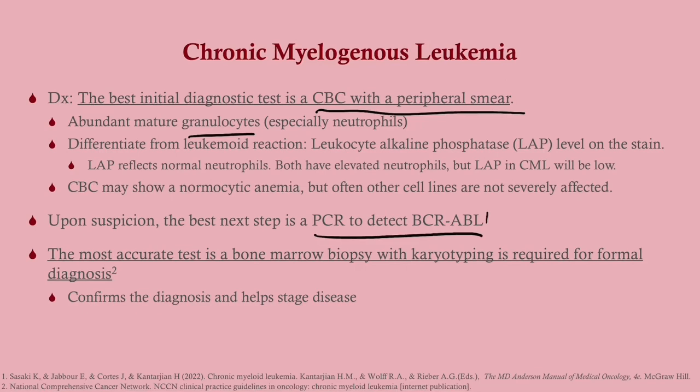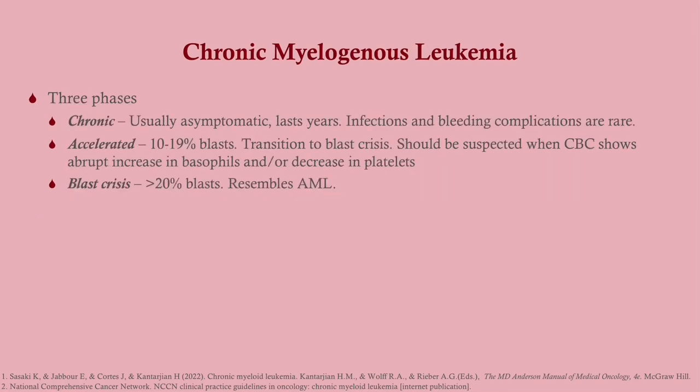The best next step upon suspicion is a PCR to detect BCR-ABL1. If positive, you're almost certainly dealing with CML, but you'll still need a bone marrow biopsy for staging. There are three phases: the chronic phase with very low or no blasts, usually asymptomatic, lasting years — infection and bleeding complications are very rare. Then the accelerated phase, suspected when CBC shows abrupt increase in basophils or decrease in platelets. Then blast crisis, with more than 20% blasts — clinically this looks like AML.